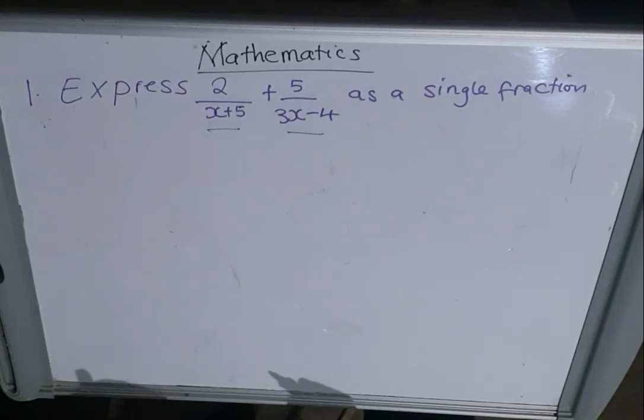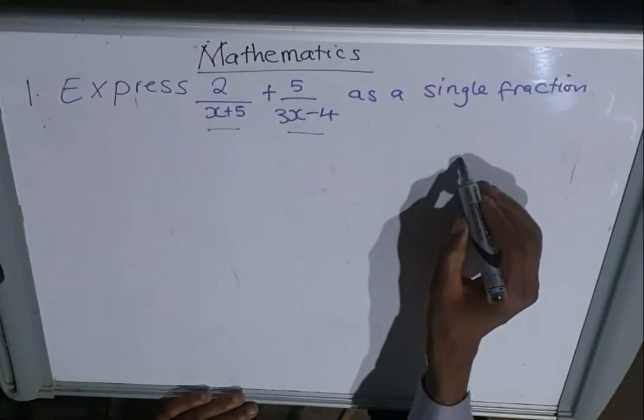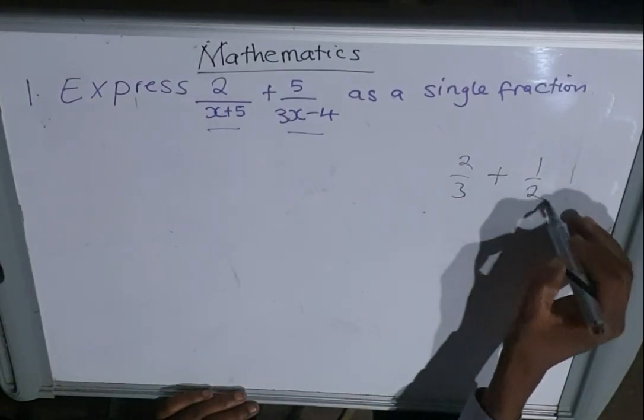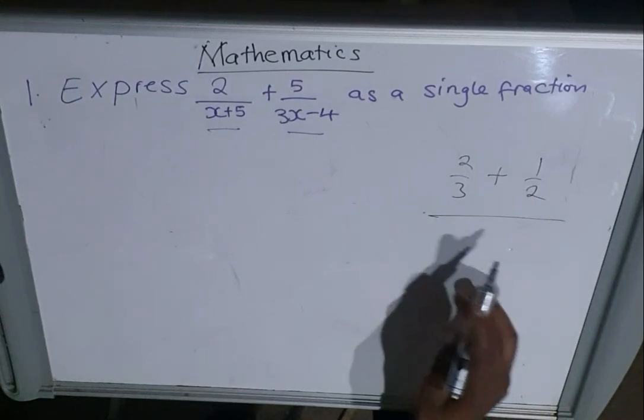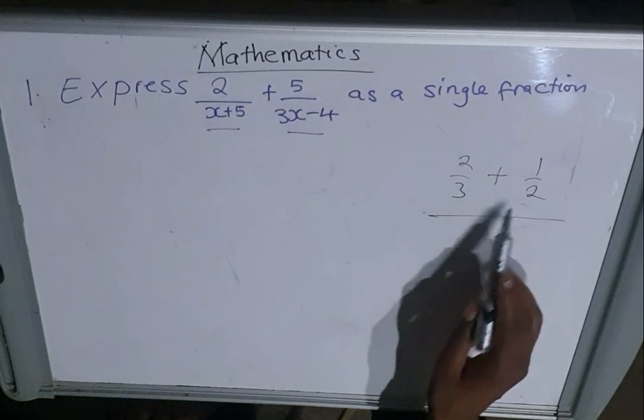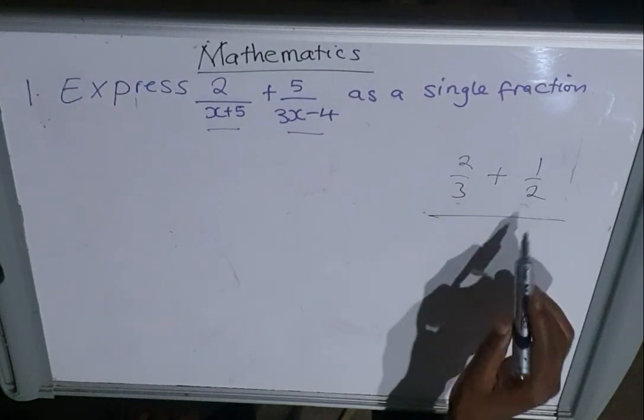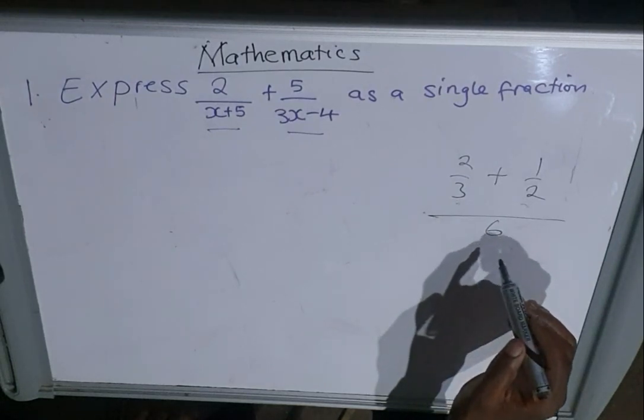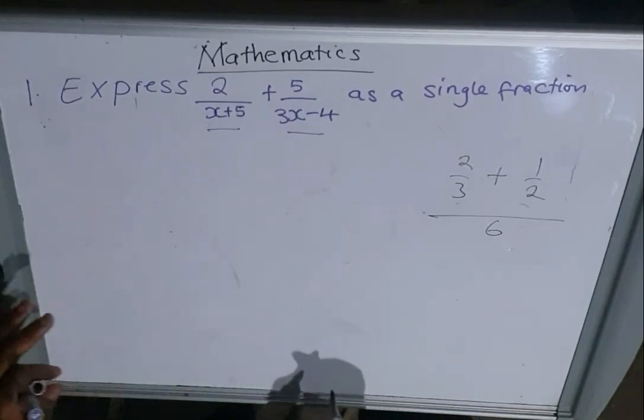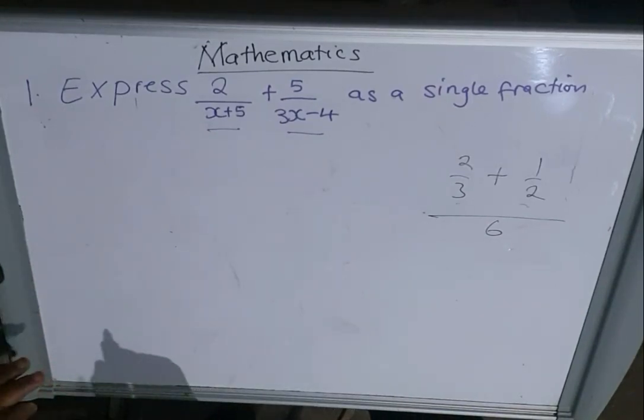It's not so different from the way we add normal fractions, like 2/3 + 1/2. What we do is we draw that line, we find the common denominator which is mostly found by multiplying these two. This gives us 6. That's the common denominator. It's the same method we're going to use even here.